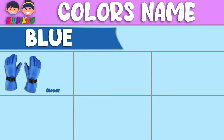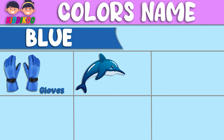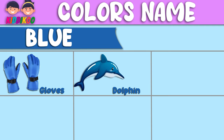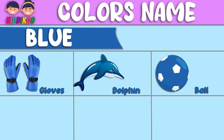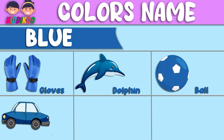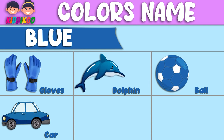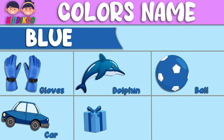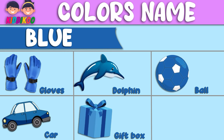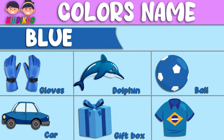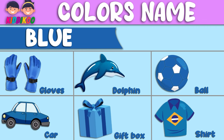Gloves — these gloves are blue. Dolphin — this dolphin is blue. Ball — this ball is blue. Car — this car is blue. Gift box — this gift box is blue. Shirt — this shirt is blue.